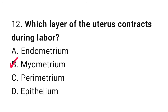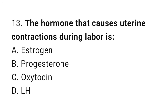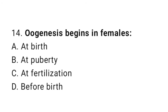The correct answer is B, Vagina. Question number 12: Which layer of the uterus contracts during labor? The correct answer is D, Myometrium. Question number 13: The hormone that causes uterine contractions during labor is? The correct answer is C, Oxytocin. Question number 14: Oogenesis begins in females. The correct answer is D, before birth.